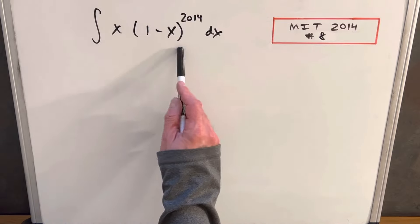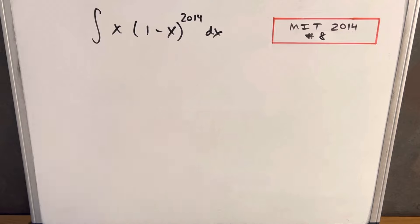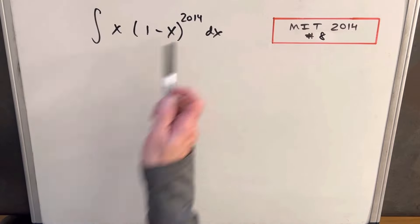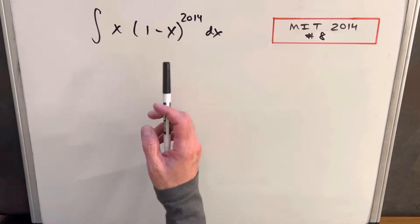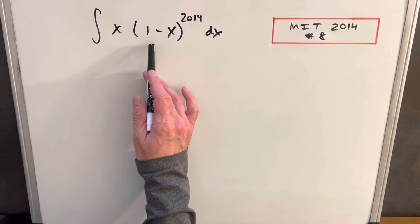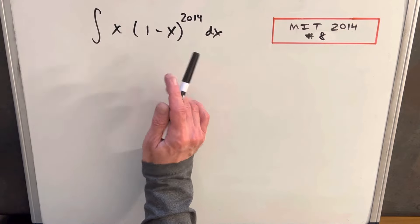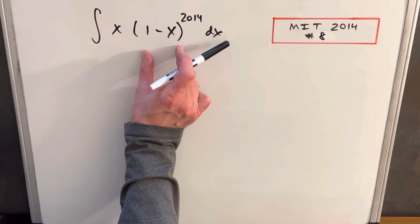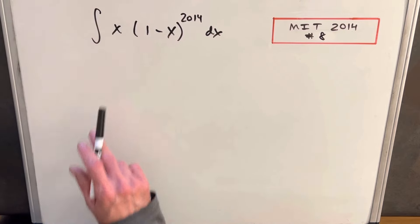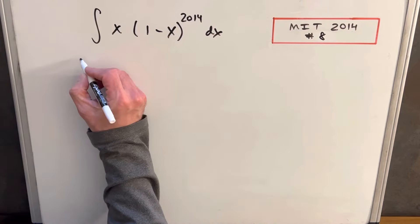Okay, my first thought was maybe to expand this thing out, but then that's going to have 2014 terms, or maybe 2015 terms. So I think we're going to avoid that. What I'm thinking is, the problem we really have is this 2014, and what I think we can do is if we do a u-substitution, if we call this our u, at least we're going to simplify this term. This term might become a little more complicated, but I think that's all right. So let's see what happens.